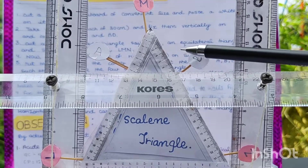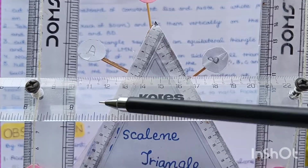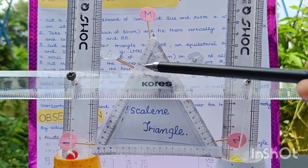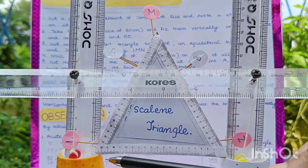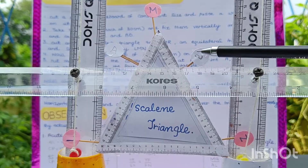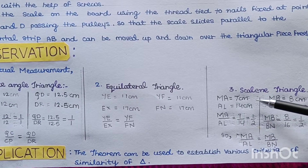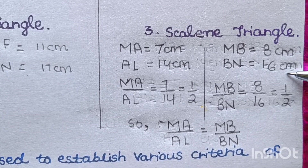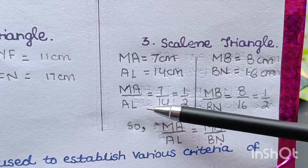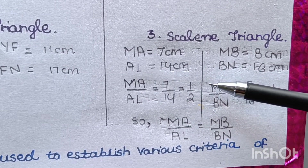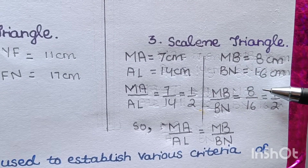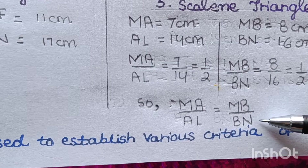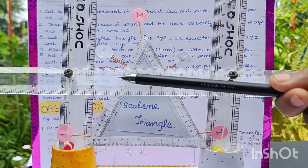We take points A and B on the triangle, with the line intersecting LM at A and NM at B. On measuring: MA is equal to 7 cm, AL is equal to 14 cm, MB is equal to 8 cm, and BN is equal to 16 cm. So MA upon AL equals 7 upon 14, which equals 1 upon 2. And MB upon BN equals 8 upon 16, which also equals 1 upon 2. Therefore MA upon AL is equal to MB upon BN, showing that the other two sides are divided in the same ratio.